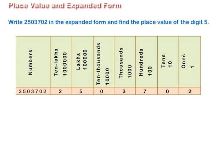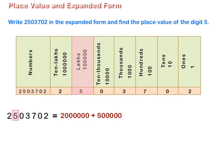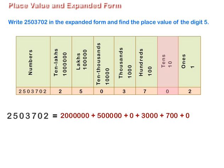In expanded form, 25,03,702 is written as 20,00,000 + 5,00,000 + 0 + 3,000 + 700 + 0 + 2. Therefore, the place value of 5 is 5,00,000.